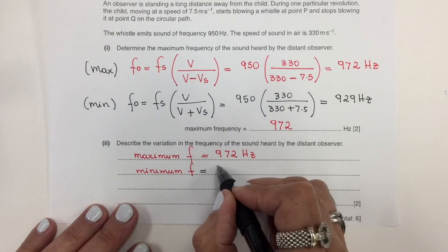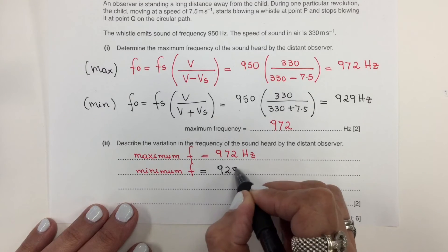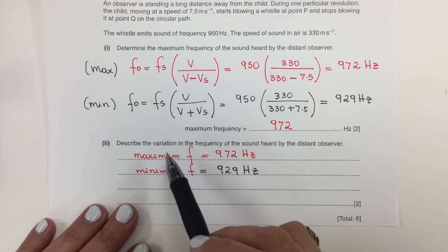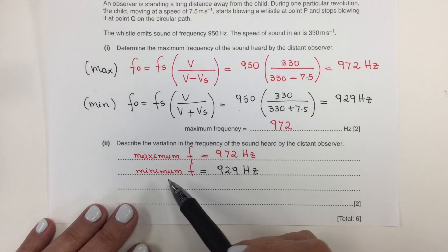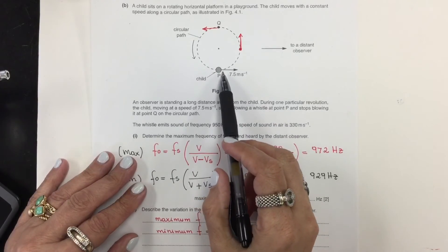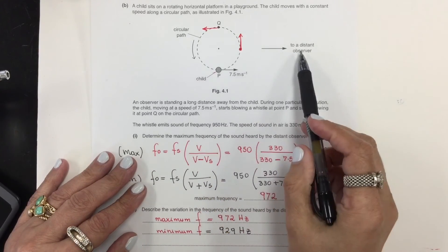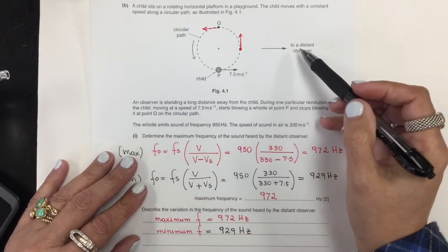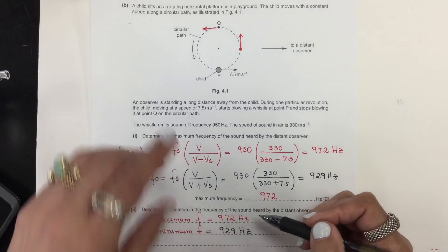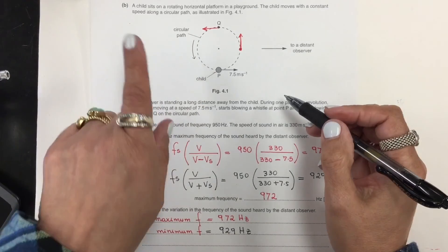Okay, so this is 929. So definitely there is a variation of frequency from the minimum to the maximum value. So when the arrow is toward the observer, the observer is going to hear a maximum frequency. When the arrow is away from the observer, it's going to hear the minimum frequency.